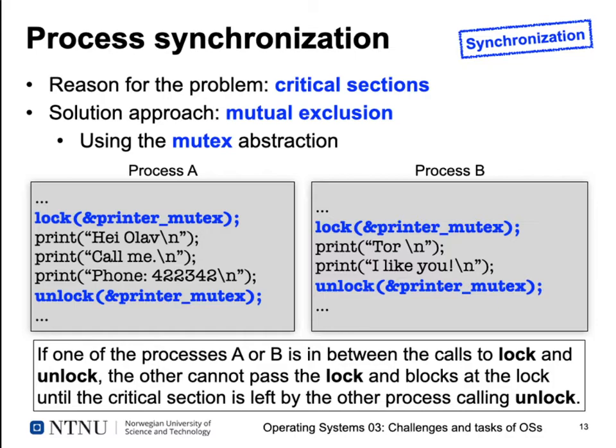We have to lock this critical section for all processes that try to use the resource — in this case, the printer — and we do this in its simplest form using our mutex. The basic functions are lock and unlock, essentially like a lock on a door: when you want to be undisturbed, you lock the door and nobody can come in until you unlock it.